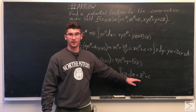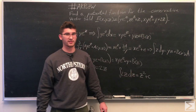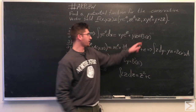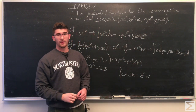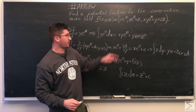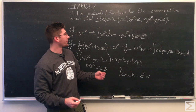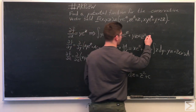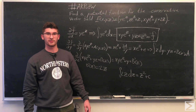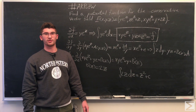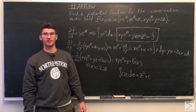We get that b(z) is equal to z squared. Replacing that, we now have our complete potential function f for the vector field. That concludes this week's Advanced Knowledge Problem. Make sure you check us out on Facebook, Twitter, and take a look at our blog at centerofmath.org. Thank you.